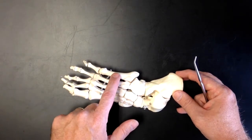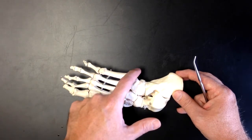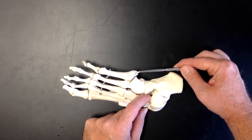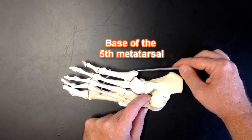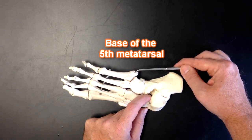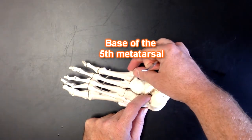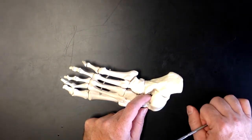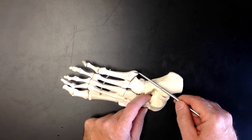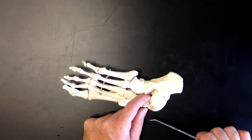Over here, metatarsal number five has this interesting feature on the base. This right here, this base of the fifth metatarsal is a site for muscular attachment. And those muscles, when they pull on this bone right here, they put a lot of stress on the bone and the bone gets bigger. So this is the base of the fifth metatarsal and you can actually palpate. You can actually feel that on the side of your foot.